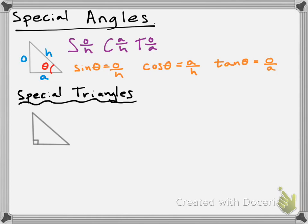We're going to assign some values. I'm going to pick easy numbers to work with — how about the number 1? We're going to label one side with a length of 1. Since there's another side which is the same length, that side is also 1. The hypotenuse can be found using the Pythagorean theorem: 1 squared plus 1 squared equals the hypotenuse squared, giving us 2, so the hypotenuse is the square root of 2.